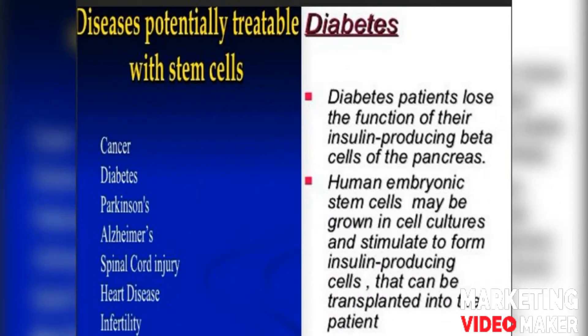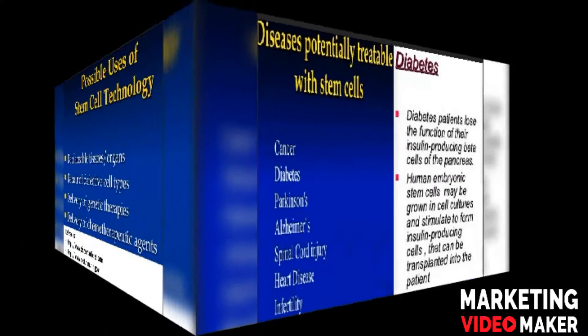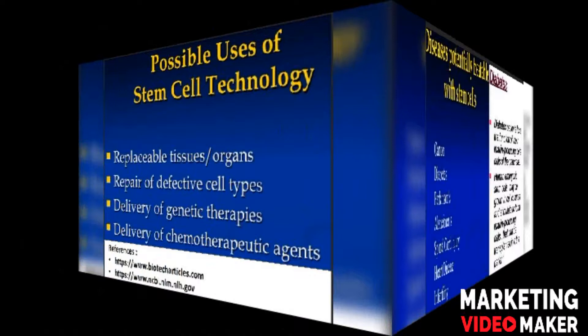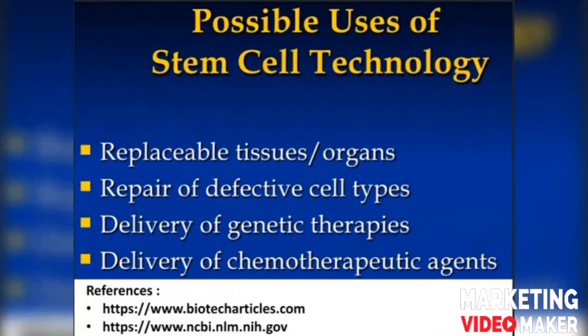Diseases are potentially treatable with stem cells, as seen in this slide. Taking the example of diabetes: human embryonic stem cells may be grown in a cell culture and stimulated to form insulin-producing cells that can be transplanted into the patient. A key use of stem cell technique is replaceable tissue or organ.